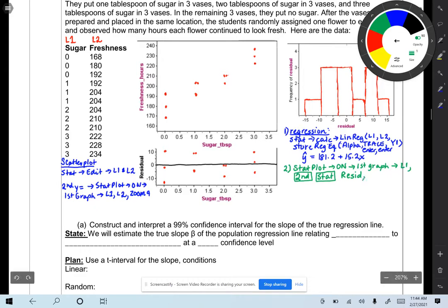And then you can just hit zoom nine. And that'll give you this graph right here. And that'll give you your residual plot.